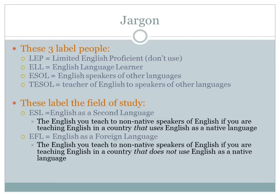In this lecture, you are learning how to teach English language arts to your English as a second language learners. What is the difference between English as a second language and language arts? Teaching English to those who already speak it well is a different task than teaching it to non-native speakers. The objective of teachers of language arts, or English, is to help native speakers increase and refine their knowledge of and their skills in using English. In contrast, the objective of teachers of ESL is to give their students a basic working command of the English language.